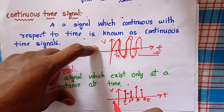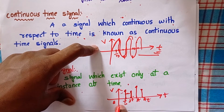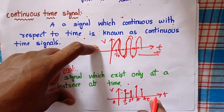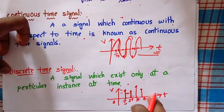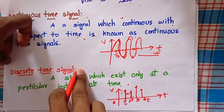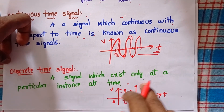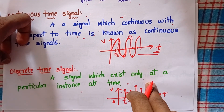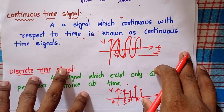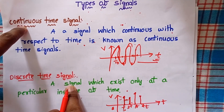Consider this is 0. In between 0 and T there is no signal. Signals exist only at a particular instance of time — that is the discrete nature of signals. That type of signal is nothing but a discrete time signal: a signal which exists only at a particular instance of time.